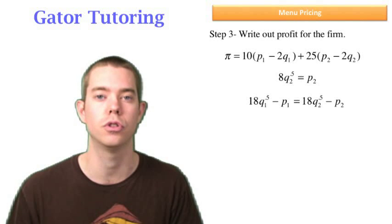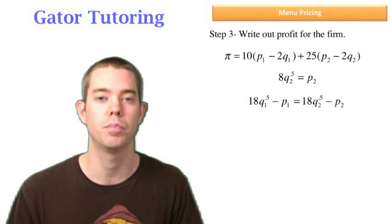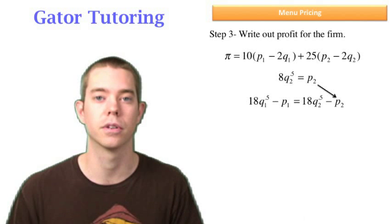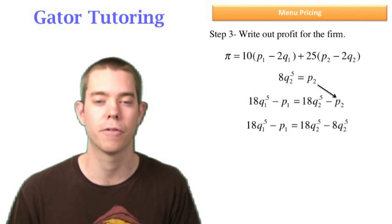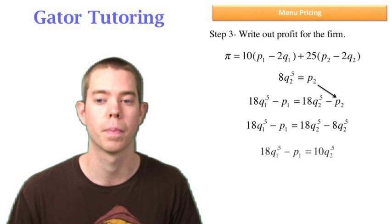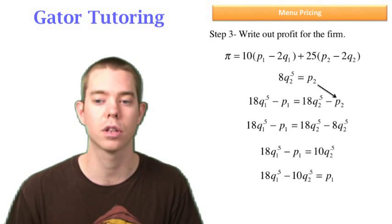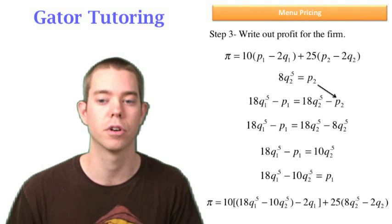P1 is not as simple. We need to first substitute P2 from the participation constraint into the selection constraint. After we've done that we can solve for P1 in terms of just Q1s and Q2s. So we do that, we rearrange this and we find that P1 is equal to 18Q1 to the 0.5 minus 10Q2 to the 0.5. We're now ready to substitute both of the P1 and the P2 into our profit function.